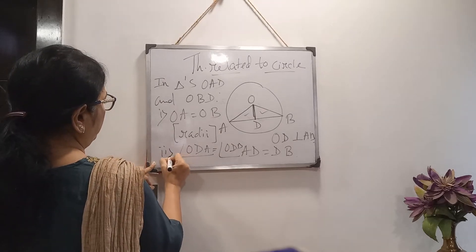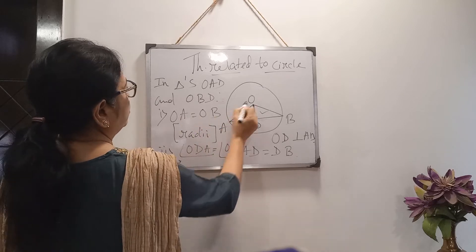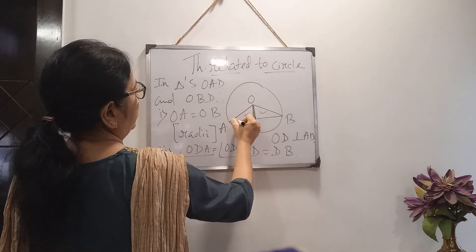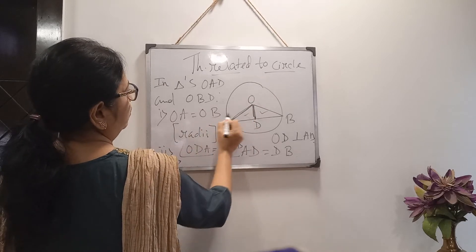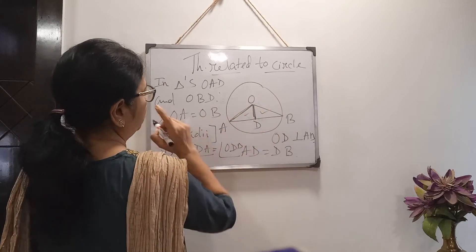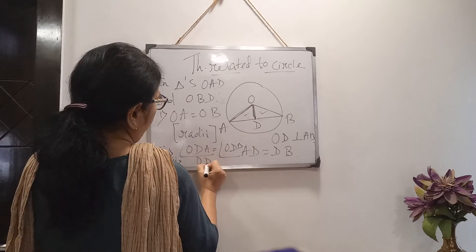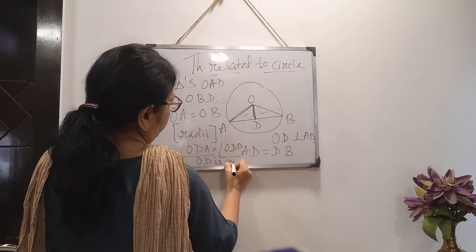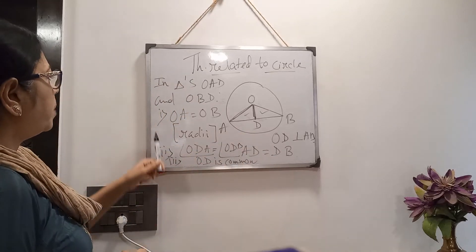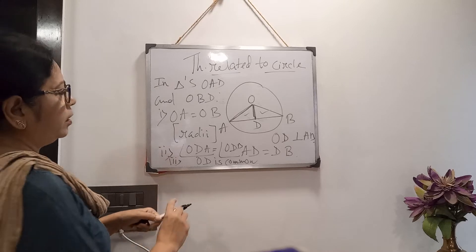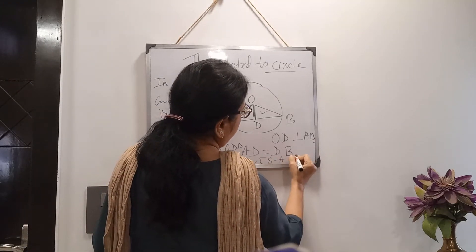For the third point: since OA equals OB, these are the hypotenuses of the two right-angled triangles, so the hypotenuses are also equal. And side OD is common to both triangles. So, by Side-Angle-Side congruency,